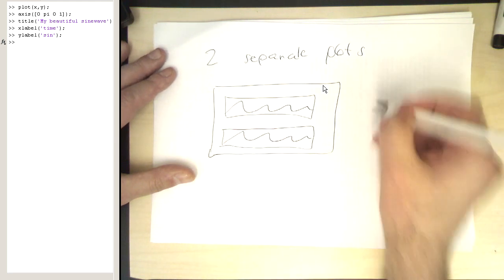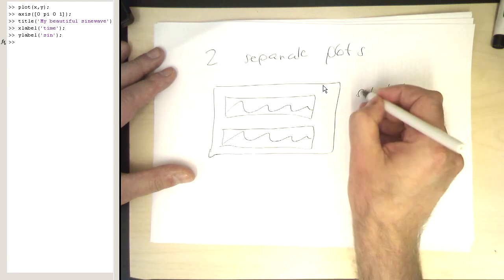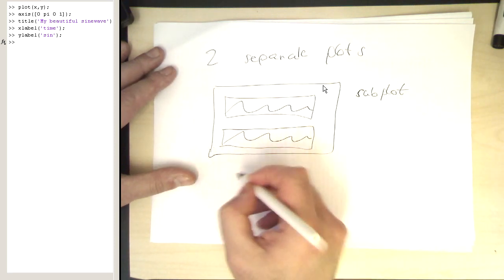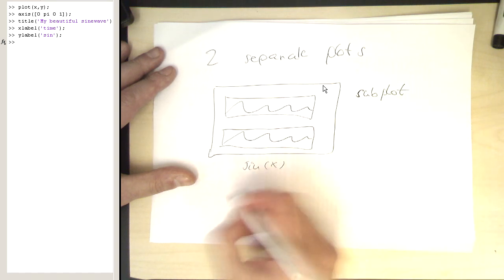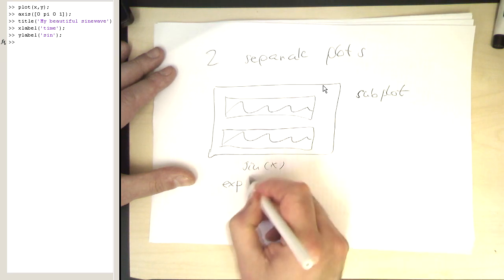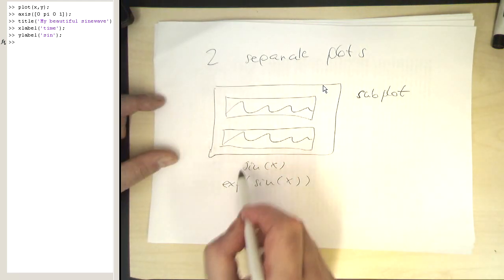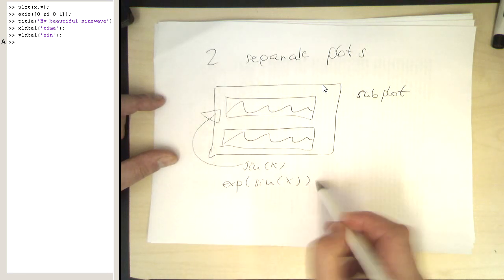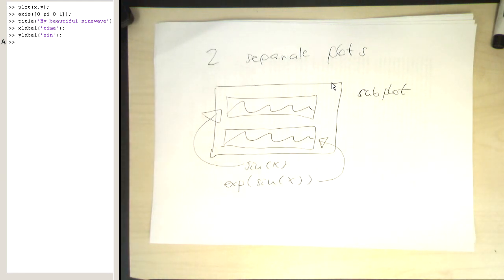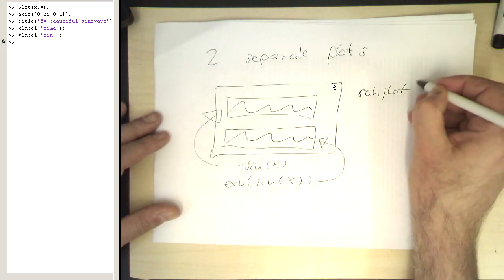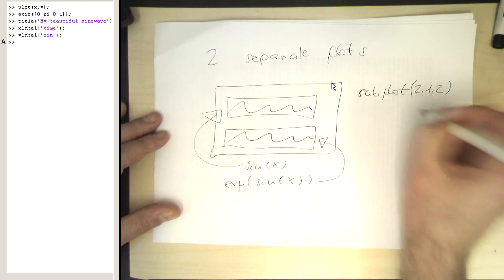In order to create something like this there's a command called subplot. So imagine we would like to create the function sine of x and we would like to just distort this a bit with the exponential function. So for example like this and we would like to plot these two functions here, so the sine function for example here and the exponential function there. So how do we do this? For this purpose we use the subplot command and the arguments of the subplot command is in the following.